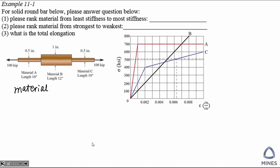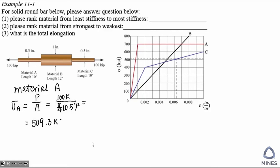Now let's take a look at material A. Since we already have the stress-strain diagram, the first thing we need to do is find out what the real stress is in this segment. The real stress in segment A for material A is going to be 509 KSI. From the picture, we can see the yield stress at A is 700, which means the real stress is smaller than the yield stress.